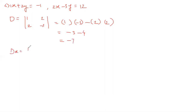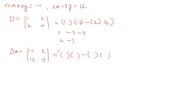Solving by cross multiplying and subtracting: 1 times minus 3, minus 2 times 2. It becomes minus 3 minus 4, that is minus 7. Now we find Dx: instead of x coefficients, we write the constants minus 1 and 12, with y coefficients as they are. Solving: minus 1 times minus 3 is plus 3, and 12 times 2 is 24. So 3 minus 24 equals minus 21.